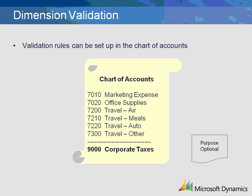Corporate taxes do not require that any dimension be entered, so the account can be set up with all dimensions as optional. When dimensions are not specified, the balance will appear in the ledger account but will not be able to be broken down by any of the dimensions. If a report is printed for a specific dimension, the balance will not appear — it will only appear when the report is printed for all dimensions.